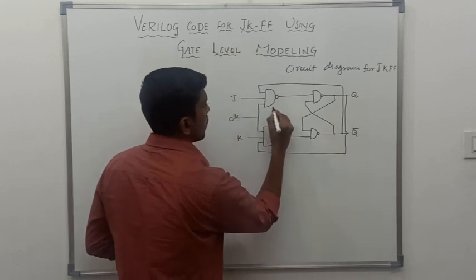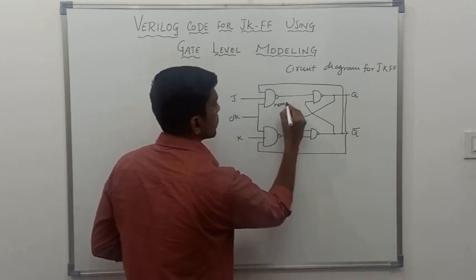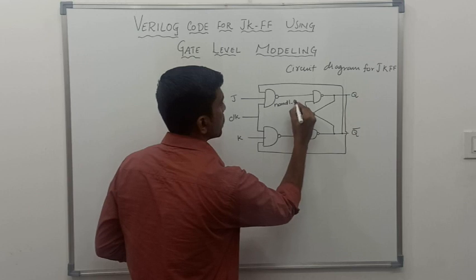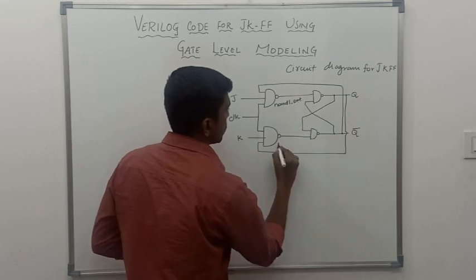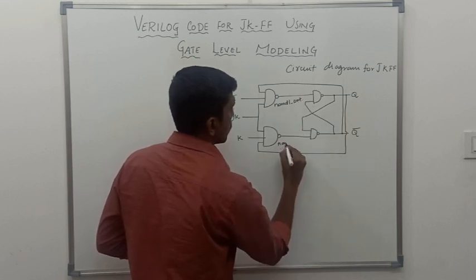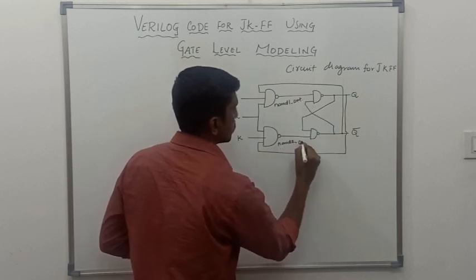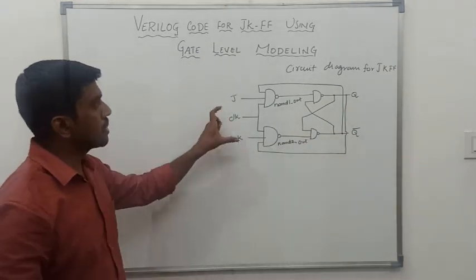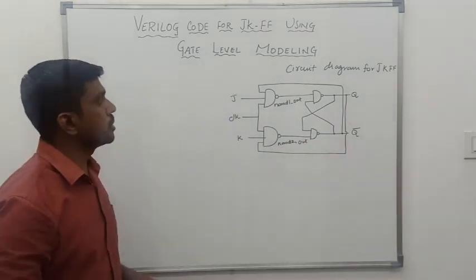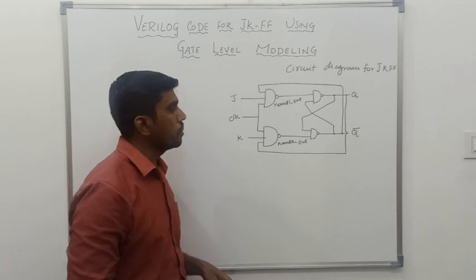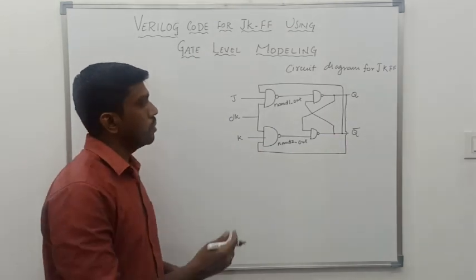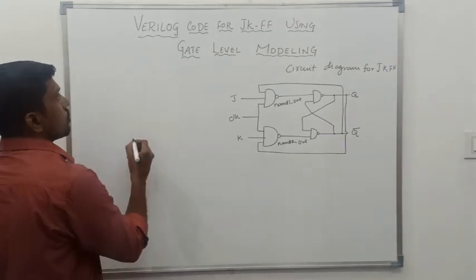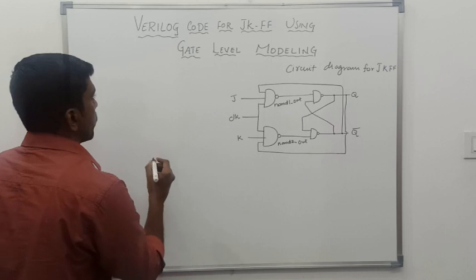This one is called NAND 1 out, and this one is NAND 2 out. This is the simple logic diagram for JK flip-flop. Now I go to write the program for JK flip-flop using gate-level modeling.